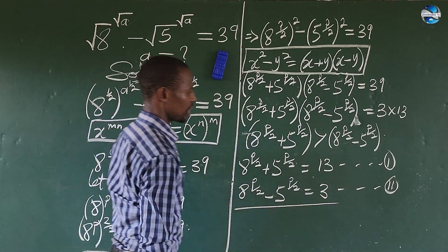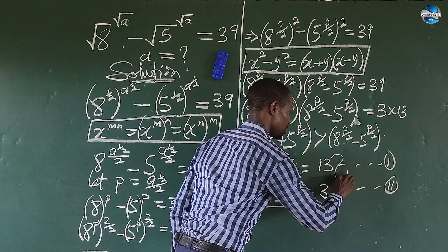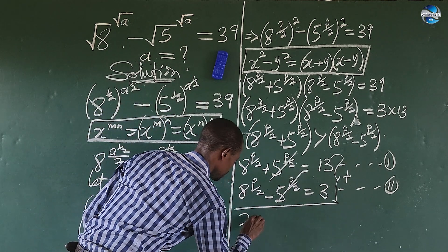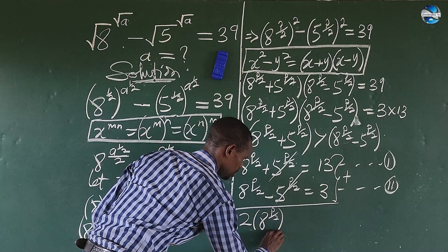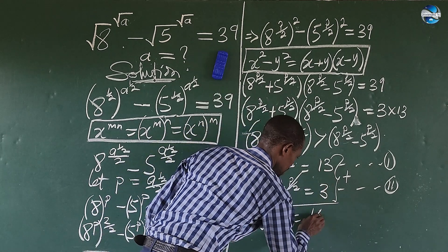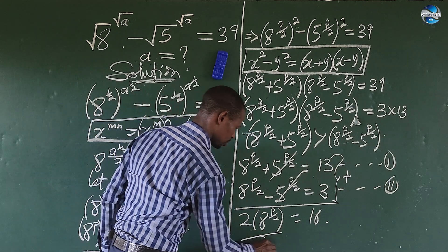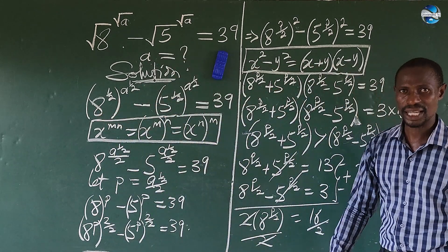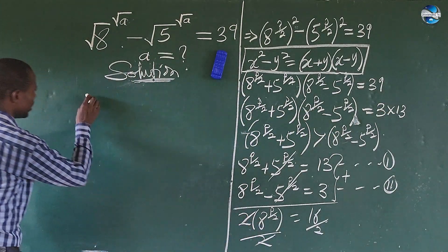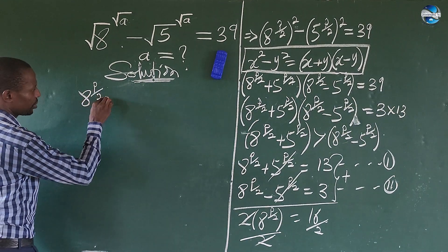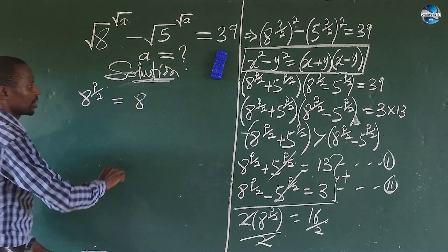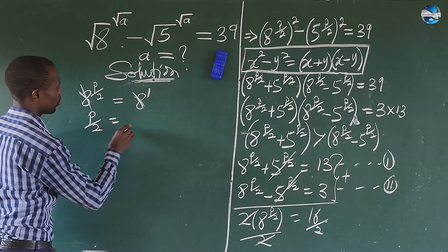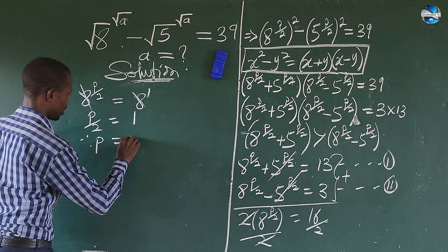So when we go to equations 1 and 2, we want to add them together. From here, let's add these two equations together. This will cancel out the 5 terms, leaving us with 2 times A to the power of P over 2, equal to 16. So divide both sides by 2. We get A to the power of P over 2, equal to 8. Since the bases are the same — 8 to the power of 1 — we have P over 2 equals 1. Therefore, our P is equal to 2.